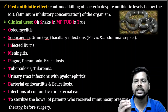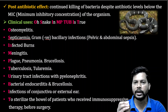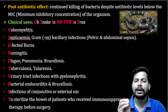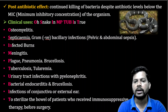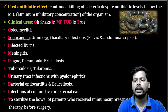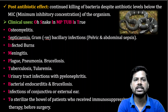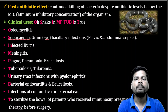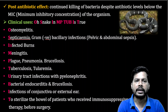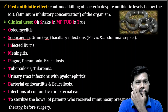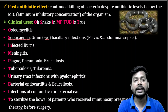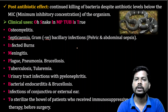Exception: neomycin and framycetin are the two aminoglycosides given by the topical route, while all remaining aminoglycosides are by parenteral route. Aminoglycosides are protein synthesis inhibitors that act by binding to the 30S ribosomal subunits in the bacterium — similar to tetracycline, which also binds to the 30S ribosomal subunits.